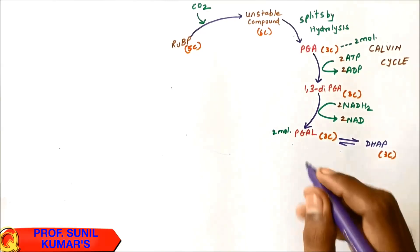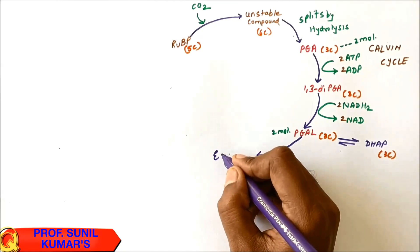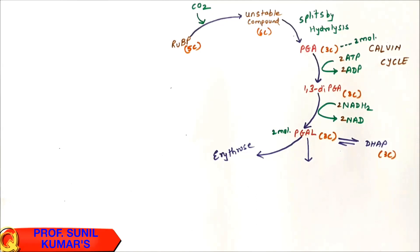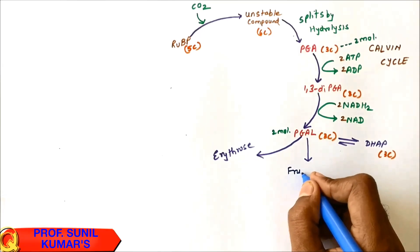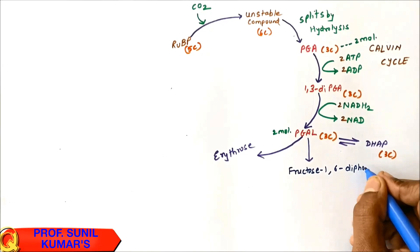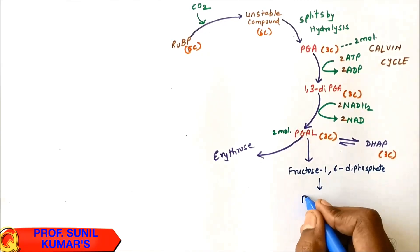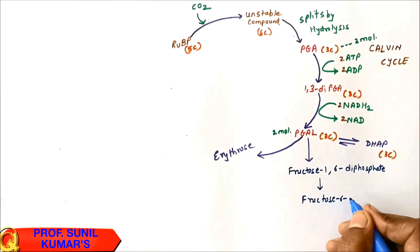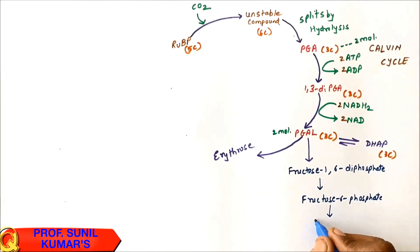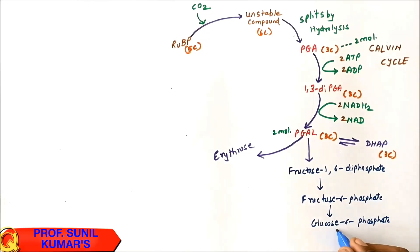Of the two molecules of PGAL, one molecule will contribute to the formation of glucose. The glucose formation pathway reverses glycolysis: going from PGAL through 1,6-diphosphate, then to fructose-6-phosphate, then to glucose-6-phosphate, and finally to glucose.